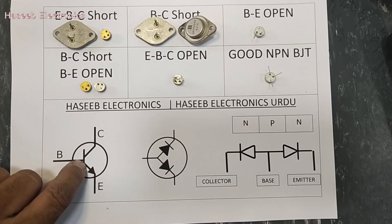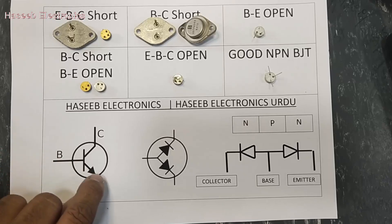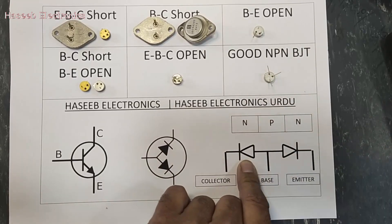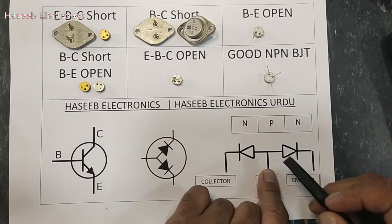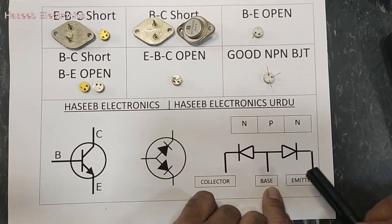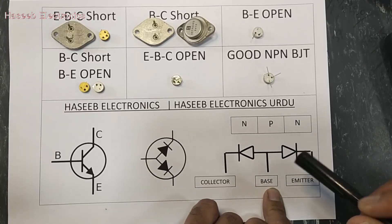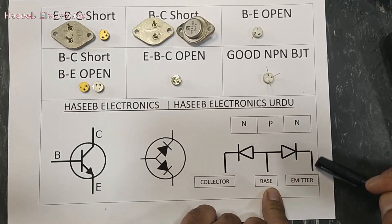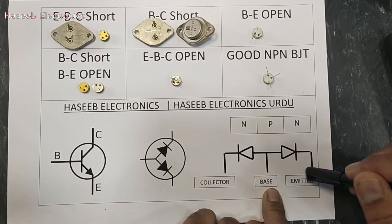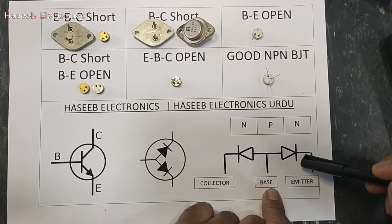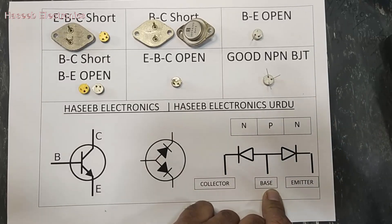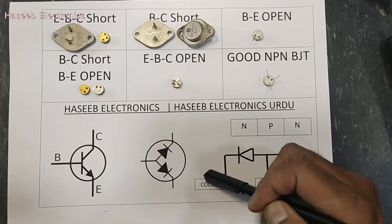The NPN transistor symbol looks like two diodes with common anodes. The anode is positive in each diode, so the P material is common. The N materials are the cathodes. We can nominate these terminals as emitter and collector. This does not mean that the transistor has two actual diodes, but its junctions look like two diodes inside.